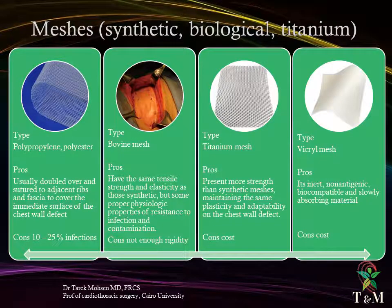Different types of meshes are available, each with pros and cons. Polypropylene and polyesters are usually doubled over and sutured to adjacent ribs and fascia to cover the chest wall defect; they are liable to infection at a rate of 10 to 25 percent, and in such cases the mesh should be removed. Bovine mesh has the same tensile strength and elasticity as synthetic ones, but offers better resistance to infection and contamination.